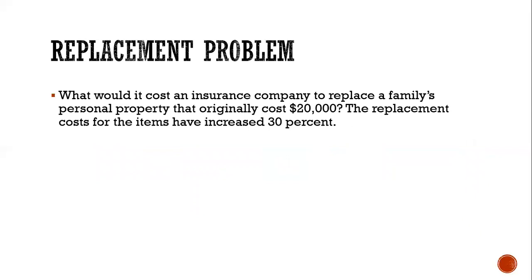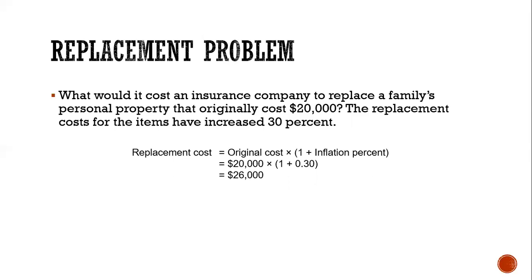In this example for replacement, we have personal property that's going to increase in value. What would it cost an insurance company to replace a family's personal property that originally cost $20,000 if the replacement cost for the new item has increased by 30%? The replacement cost is going to be the original cost times one plus the percentage it's increased — so $20,000 times 1.3 — which gives us a replacement cost of $26,000.